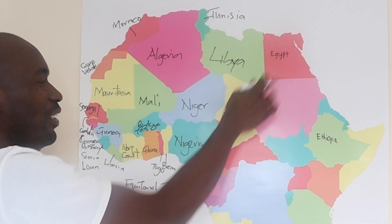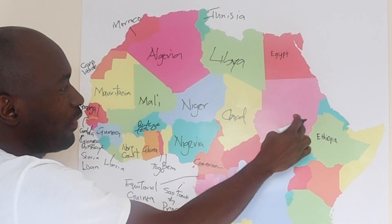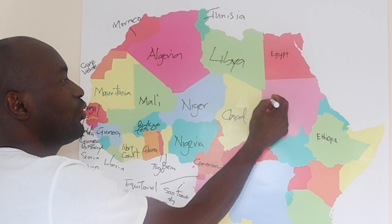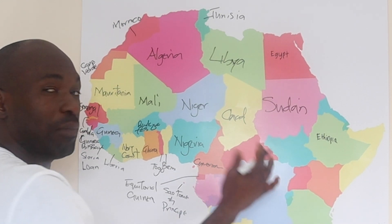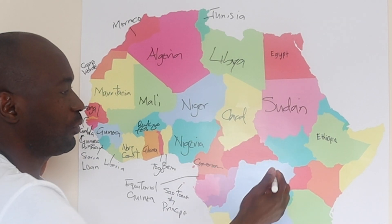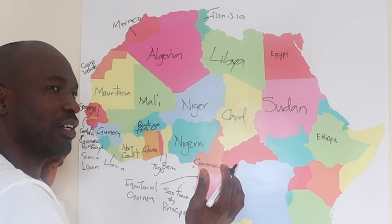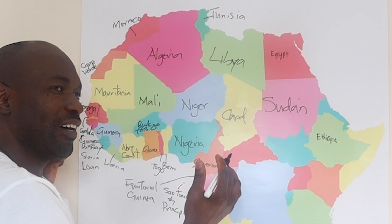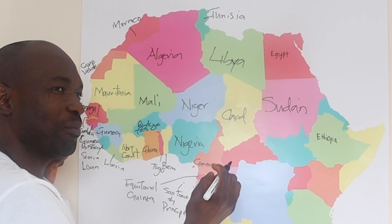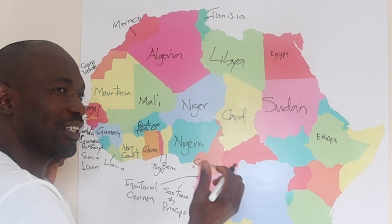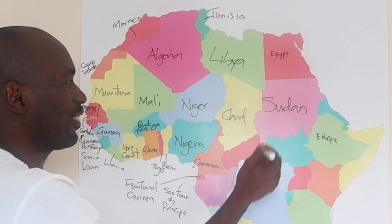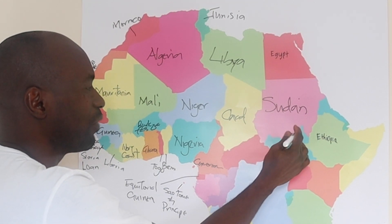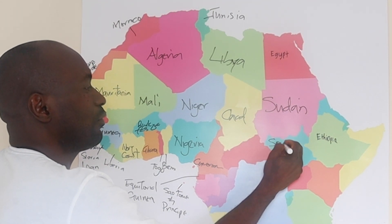And Adebayo recognized Egypt. And right here is Sudan. Sudan used to be the biggest country in Africa in terms of land mass, but it separated. Adebayo, what year did Sudan break up into Sudan and South Sudan? By 2011, in July. Yeah, 2011 — you were looking at that earlier. So this is South Sudan.